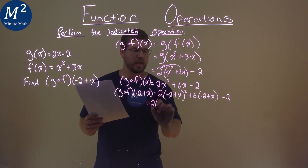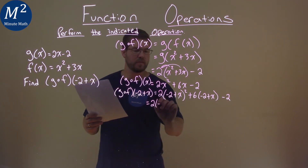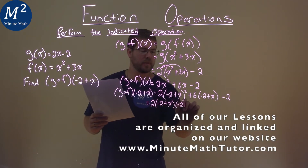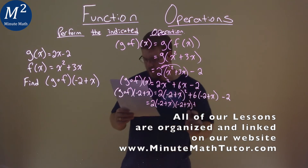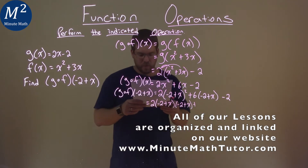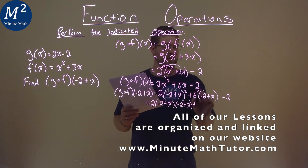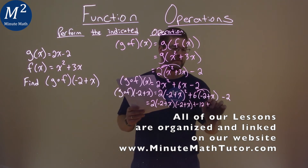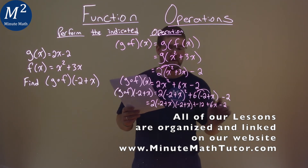Well, 2 times, remember, this whole thing squared is negative 2 plus x times itself, negative 2 plus x. Plus, we can distribute the 6 across. So 6 times negative 2 is a negative 12. And 6 times x is a 6x. And then we subtract a 2.